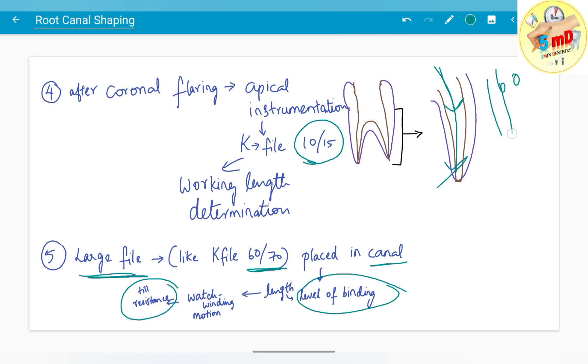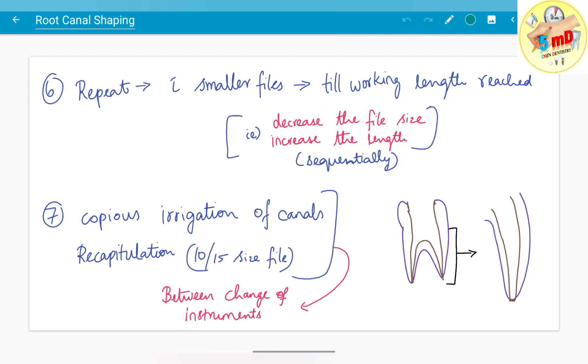You place the file not to full working length, but till where you feel binding, where the file touches the canal walls. Then do a watch winding motion, cleaning the walls circumferentially till resistance is felt. Repeat with smaller files while proceeding down. For every millimeter increase in length, decrease the file size. Copious irrigation and recapitulation with smaller file sizes 10 or 15 help prevent debris being pushed beyond the peri-apex.